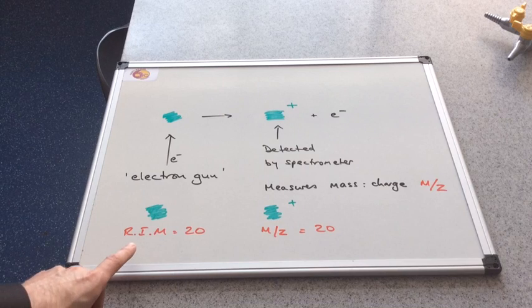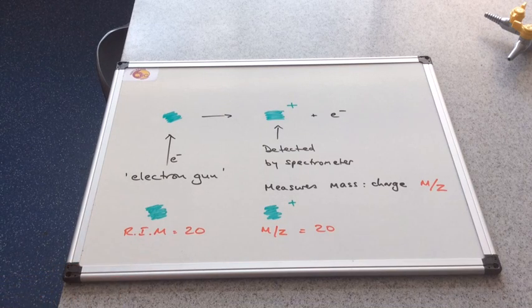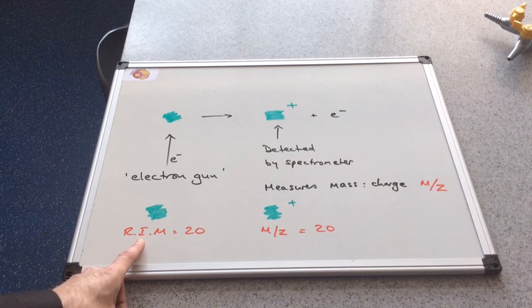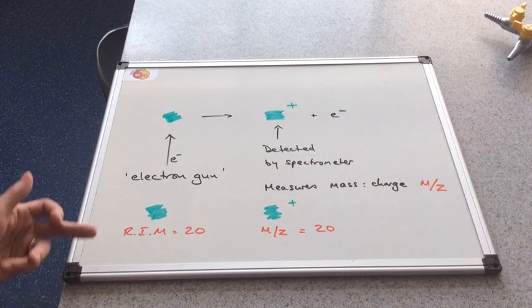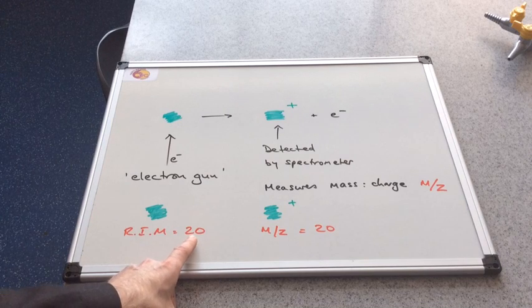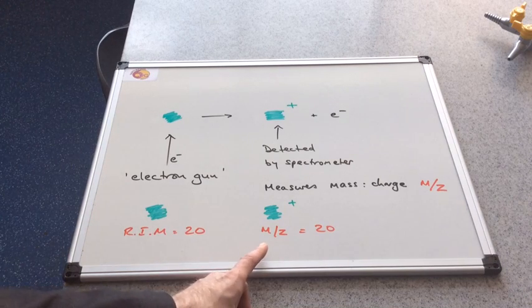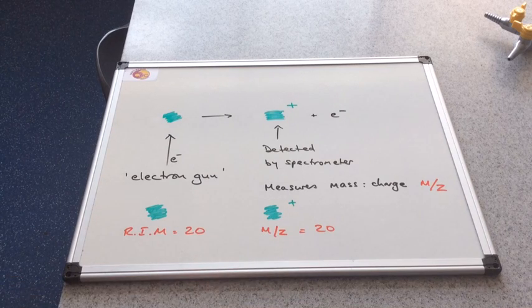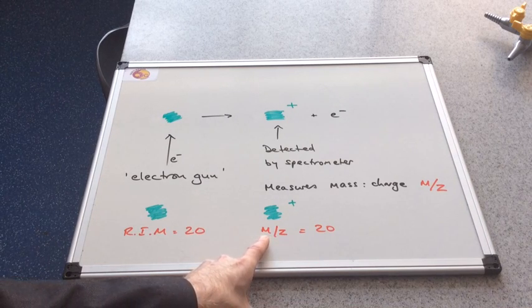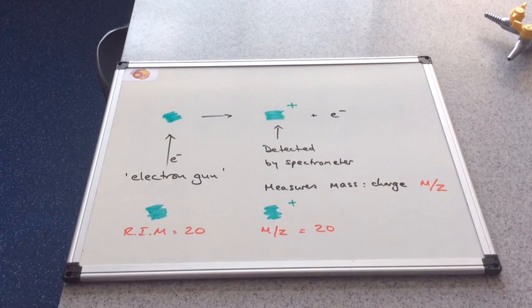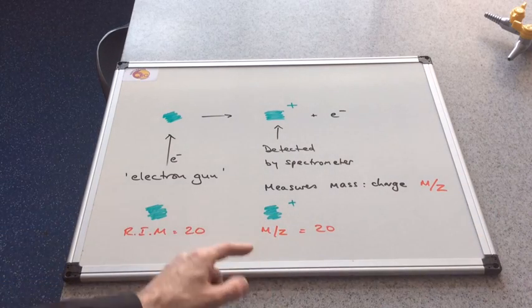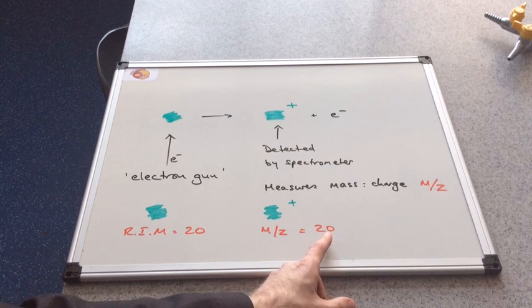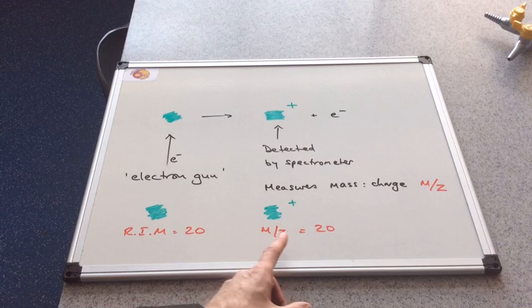I'm going to give these particles a random mass. Let's imagine the relative isotopic mass of this isotope has a mass of 20. If we knock out the electron, the mass to charge ratio—denoted as M over Z—of this particle is also 20. Essentially, the mass of both of these are the same.